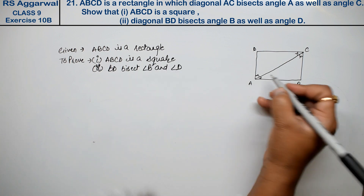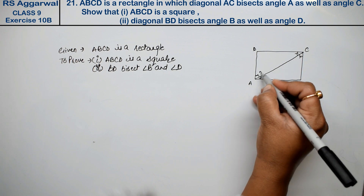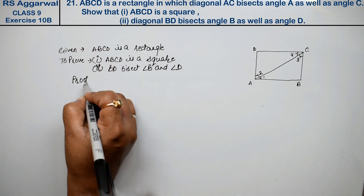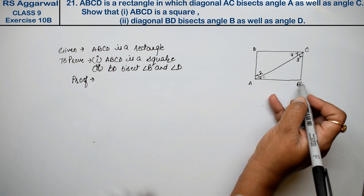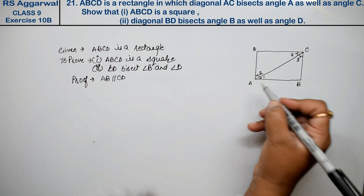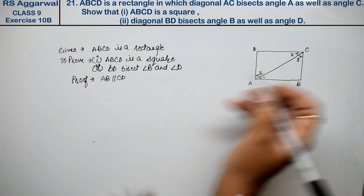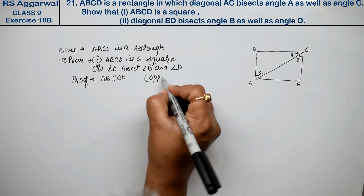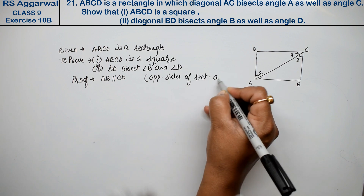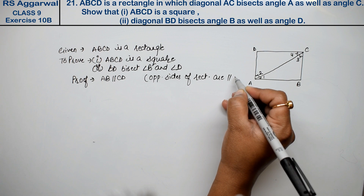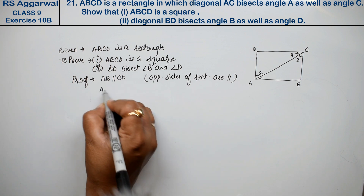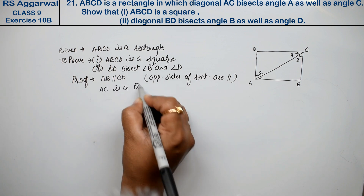तो हम देखिए, AC already हमें दी हुई थी, तो हम इसके angles मालें — angle 3 and angle 4. Proof: अब हमें पता है AB parallel है CD को, because it's a rectangle, opposite sides are parallel. Opposite sides of rectangle are parallel and equal. तो जब यह दोनों opposite हैं और AC क्या है उसकी? Transversal. AC is a transversal.